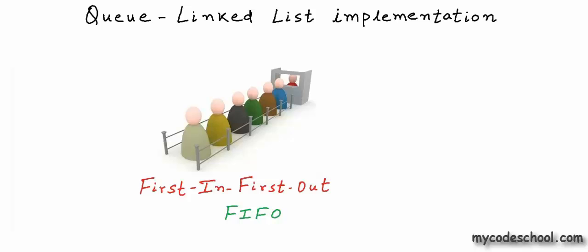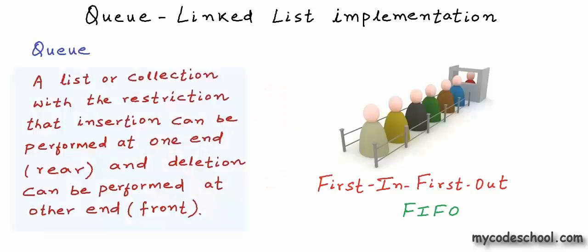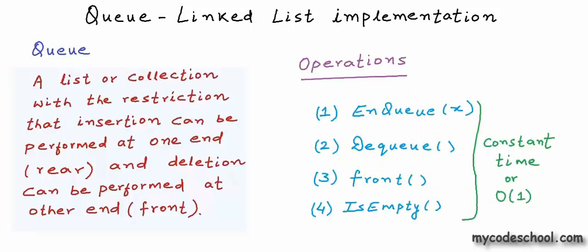A queue, as we know from our previous discussions, is a structure in which whatever goes in first comes out first. A queue data structure is a list or collection with the restriction that insertion can be performed at one end and deletion can be performed at the other end. An insertion is called an enqueue operation and a deletion is called dequeue.